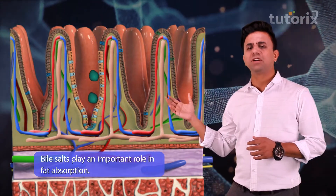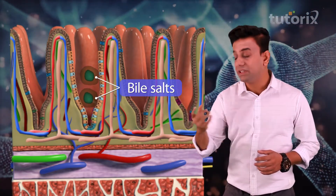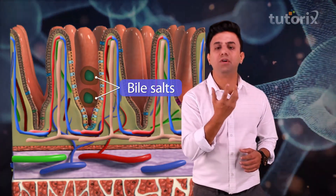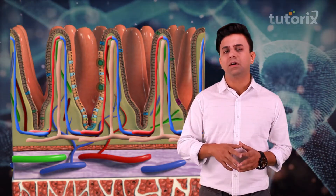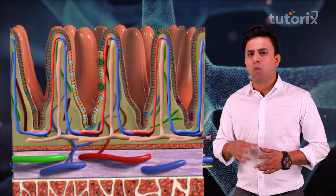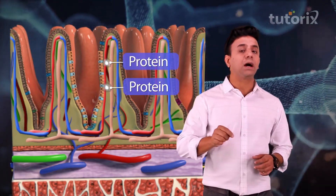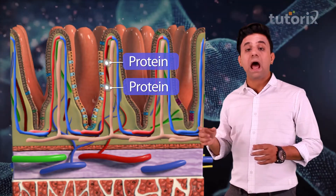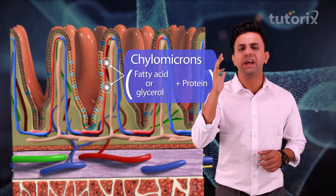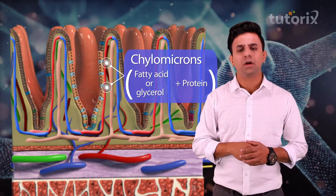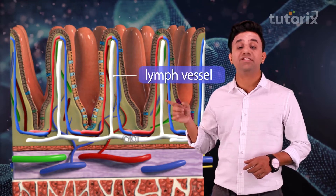This is where the role of bile salts comes into play. The bile salts form a coating — they form a globule, that is a droplet, with these fatty acid and glycerol, and this droplet is known as micelles. These micelles are water soluble and hence will move inside the intestinal mucosa. Inside the intestinal cells, the layer of bile salts is removed, and a protein layer comes and surrounds the fatty acid and glycerol. This combination with the protein layer is known as chylomicron. These chylomicrons are absorbed into the lymph vessel of the villi, and this lymph vessel of the villi is known as lacteal.